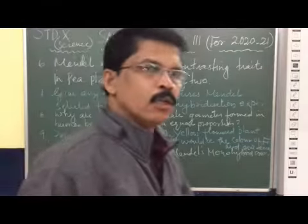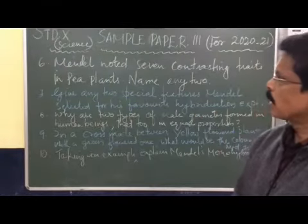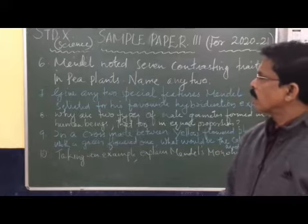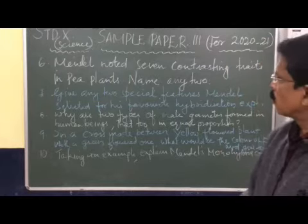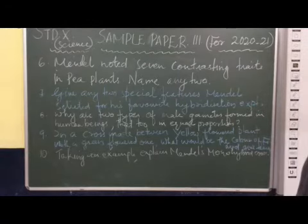Welcome back children. We are continuing the sample question paper of class from chapter Heritage. Question 6: Mendel noted seven contrasting traits in pea plants. Name any two.